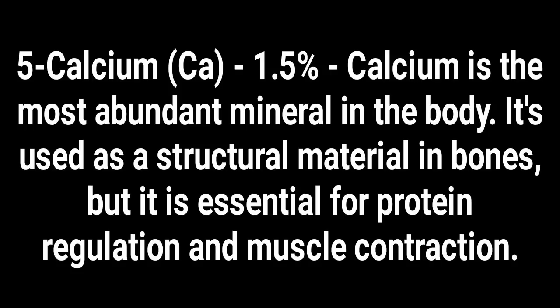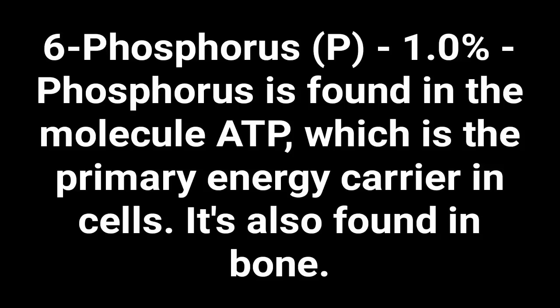Number five: calcium — 1.5 percent of the human body. Calcium is the most abundant mineral in the body. It is used as a structural material in bones, but it is also essential for protein regulation and muscle contraction.